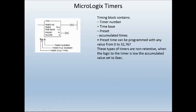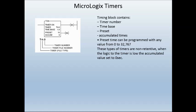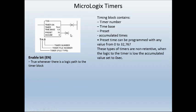The preset value can be programmed with any value from 0 to 32,767. The file structure for a MicroLogix — and the majority of controllers used with RSLogix 500 — is always going to be T for the file type. T is always for timers, and so is file number 4. Then you have the name of your timer. These timers are non-retentive: when the logic to the timer is false, its accumulated value will be set to 0. Your timer is an output, and as soon as the logic in front of it goes false, the accumulated value automatically resets to 0 — hence it is non-retentive.